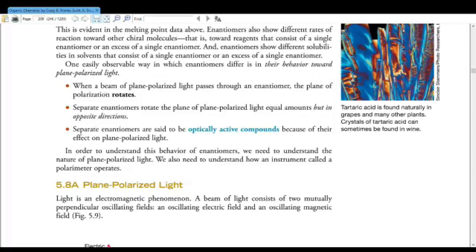When ordinary light is passed through a polarizer, the polarizer interacts with the electric field, so that the electric field of the light that emerges from the polarizer is oscillating only in one plane. Such light is called plane polarized light. And all you need to know is that enantiomers can rotate this plane polarized light. When a beam of plane polarized light passes through an enantiomer, the plane of the polarization rotates. Separate enantiomers rotate the plane of the polarized light in equal amounts but in opposite directions. Separate enantiomers are said to be optically active compounds.